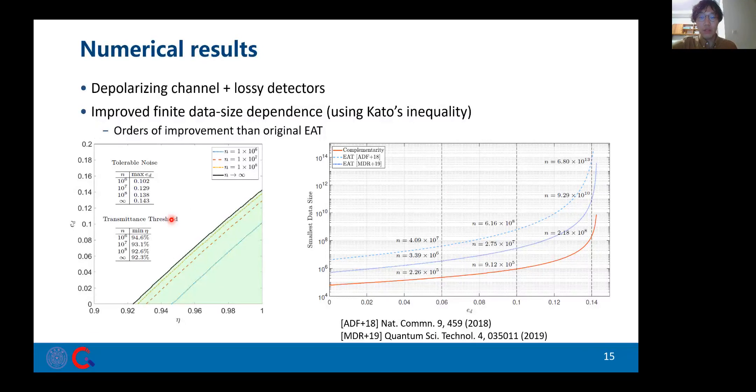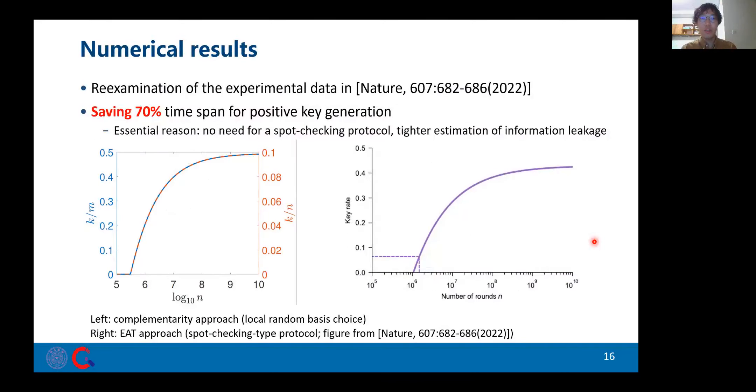On the experimental side, we find our results particularly efficient in the finite-size regime. We take some numerical simulation results. In the practical regimes achievable by NV Center and atomic platforms, compared to the original EAT methods, our results cut down the least number of rounds for positive key generation by several orders, as can be shown by this figure. And our method is even advantageous to improved EAT methods that use second-order techniques. By re-examining the data from the recent DIQKD experiment, we find that the experimental time span can actually be shortened by 70%.